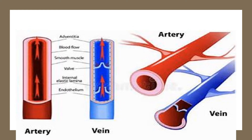Veins carry deoxygenated blood towards the heart, with the exception of the pulmonary veins. They are thin-walled and possess a wide lumen, while arteries possess a narrow lumen. Veins are bluish in color. Valves are present, providing unidirectional flow of blood. Veins get filled up at the time of death, and blood in veins moves under very low pressure.